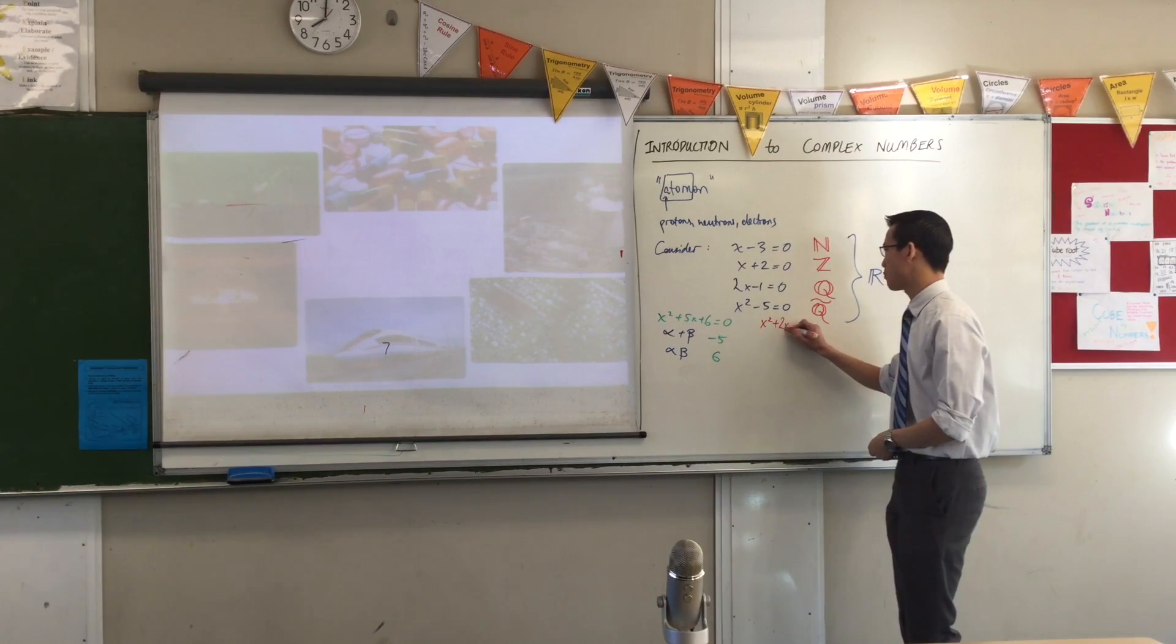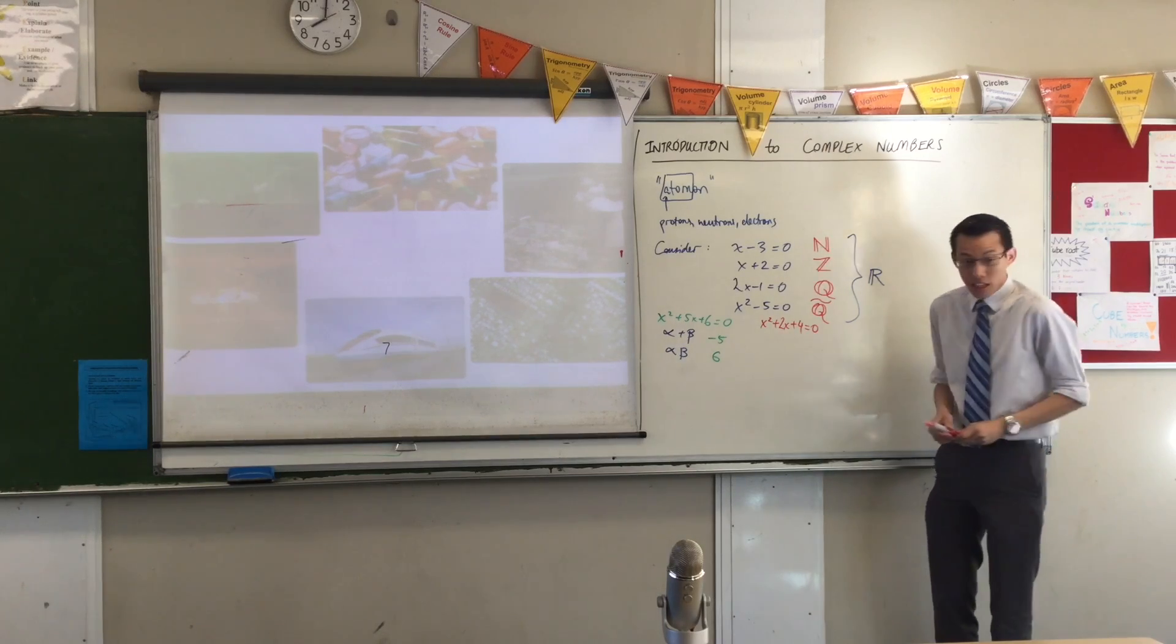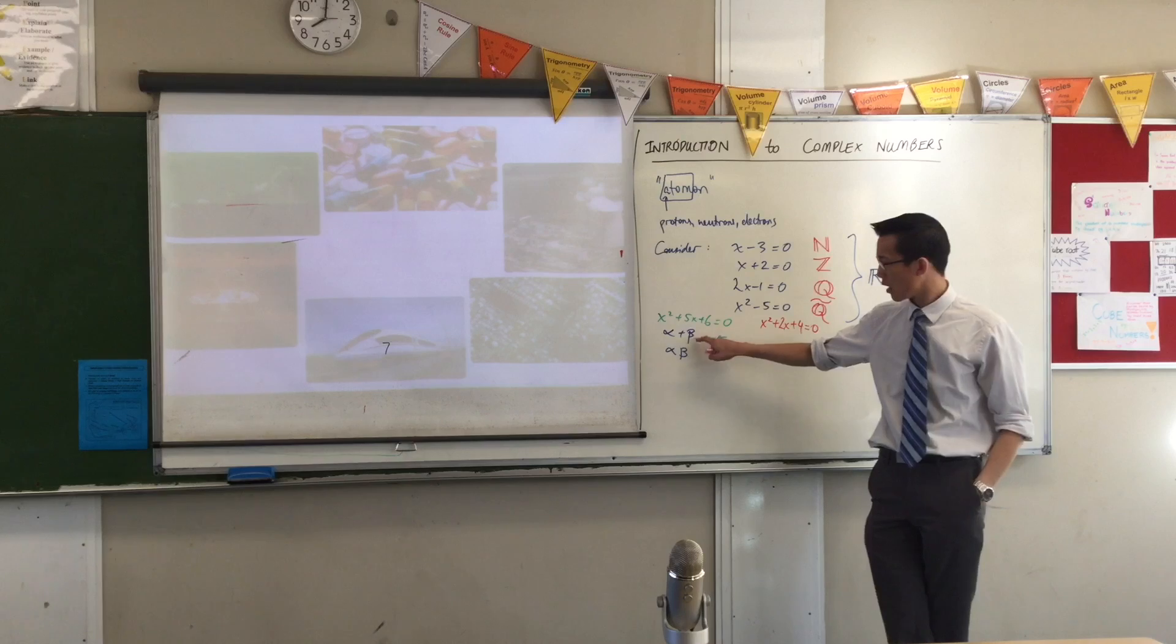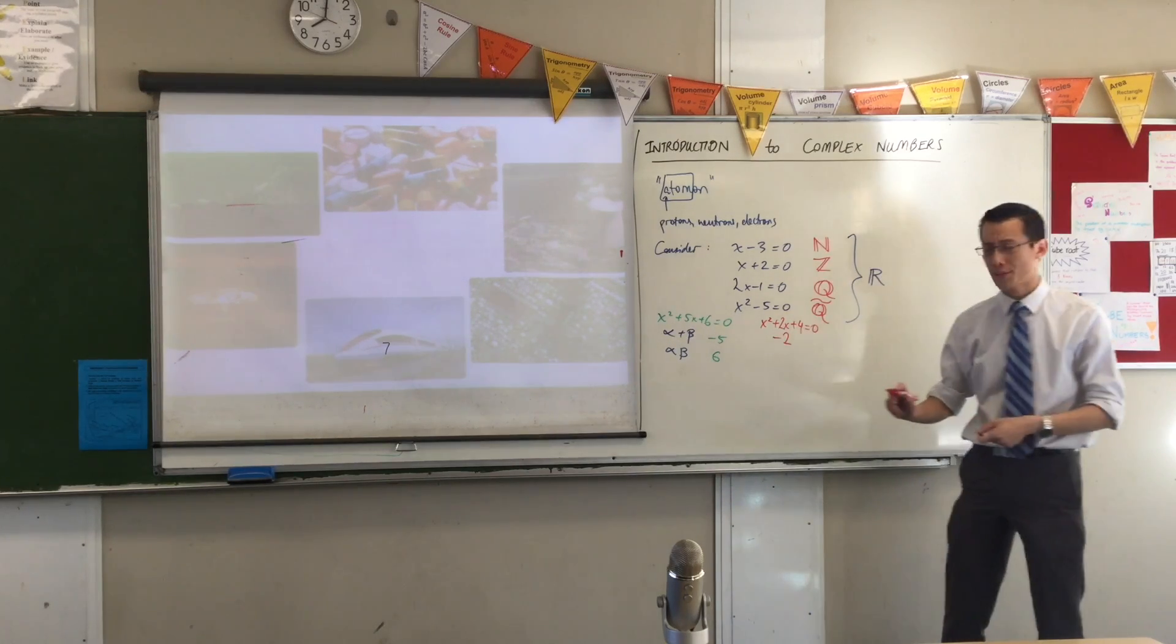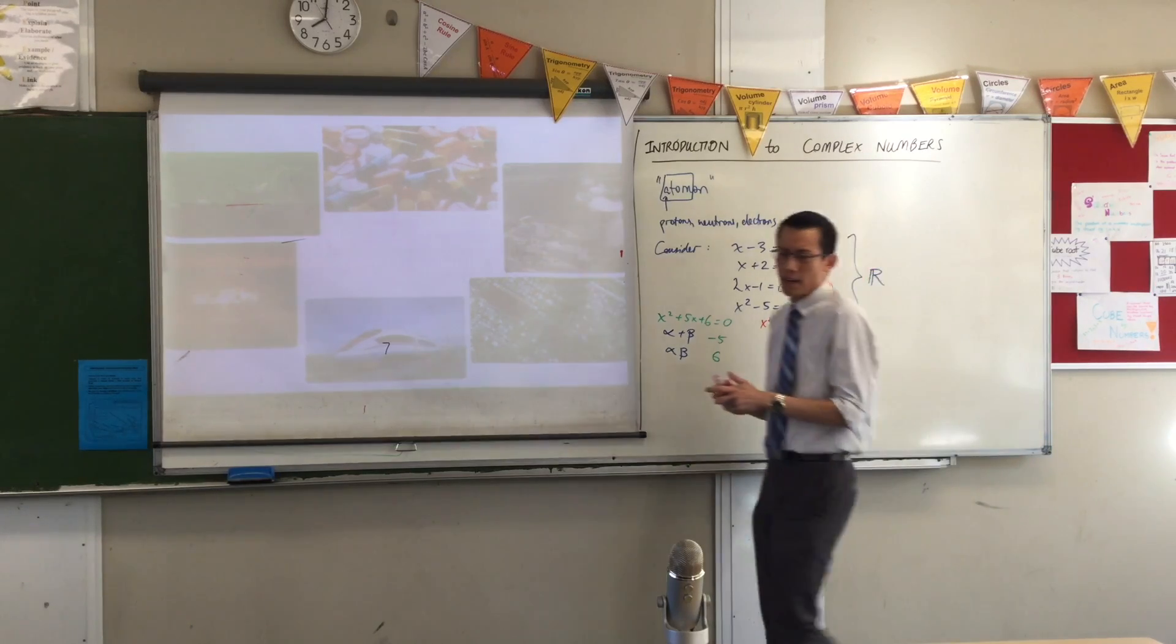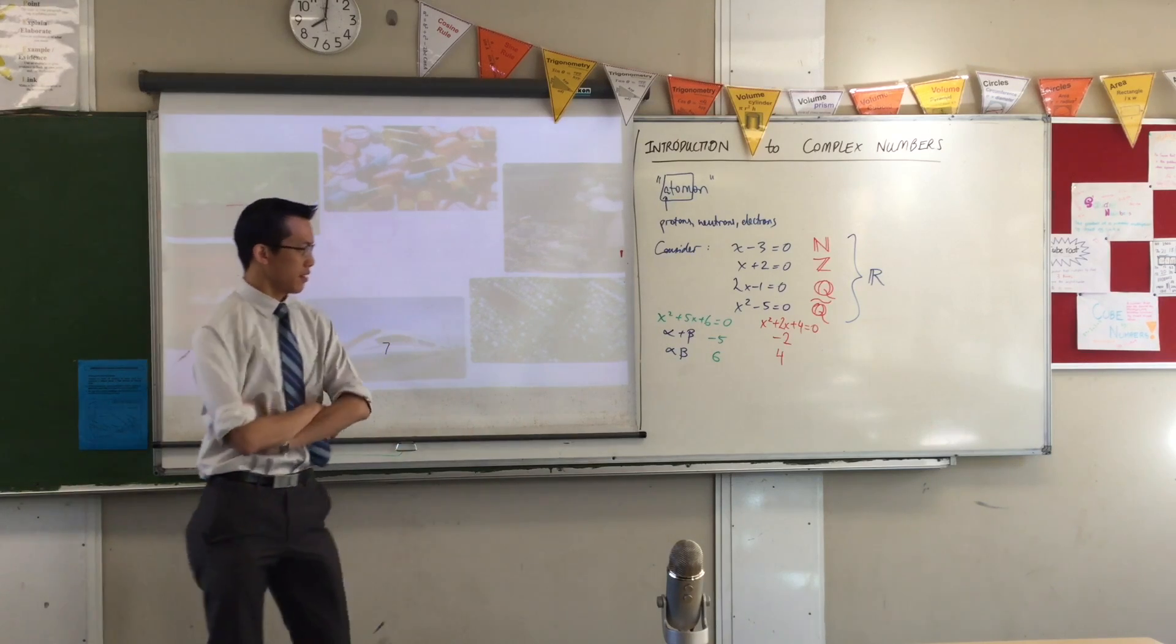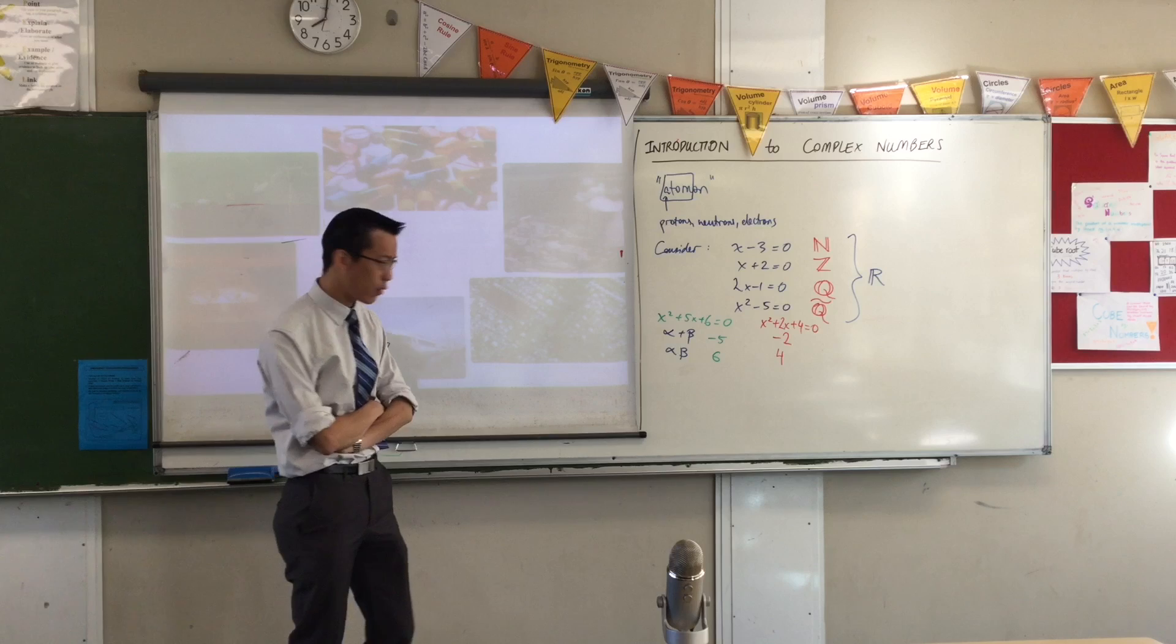But I gave you another quadratic. I gave you this guy: x squared plus 2x plus 4 equals 0. Just like before, you can use -b/a here and that gives you negative 2, and then you use c/a to get a product that gives you 4. Now the number crunching works just fine, but this is a bit weird. This is weird. Did you notice how weird it is?